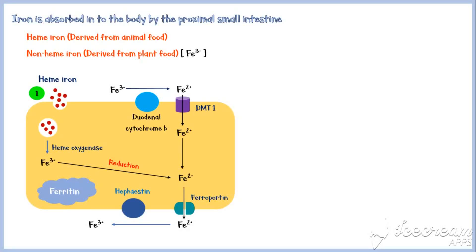After entering the cell, iron within heme is converted to ferric by the enzyme heme oxygenase, as indicated by number 2. Non-heme iron should be converted to ferrous form in order to be absorbed by the intestinal cells, as indicated by number 3. This conversion is catalyzed by an enzyme called duodenal cytochrome B. Then ferrous is absorbed into the cells through a transporter called divalent metal transporter 1, or DMT1, as indicated by number 4.